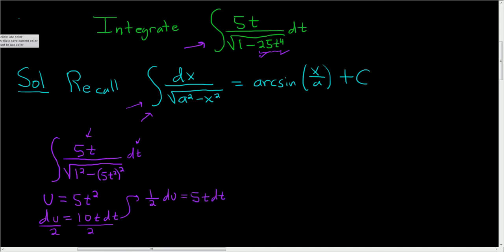And now we can directly make the substitution. 5t dt, we know that's 1 half du. So this is equal to 1 half, we can just pull it out much cleaner, du. And in the denominator, we have the square root of 1 squared minus u squared.